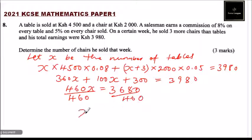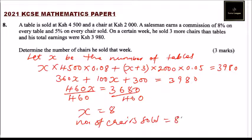So x equals - use your calculator - you'll get x is 8. And because the salesman sold 3 more chairs than tables and x is the number of tables, the number of chairs sold equals 8 plus 3, which is 11 chairs.